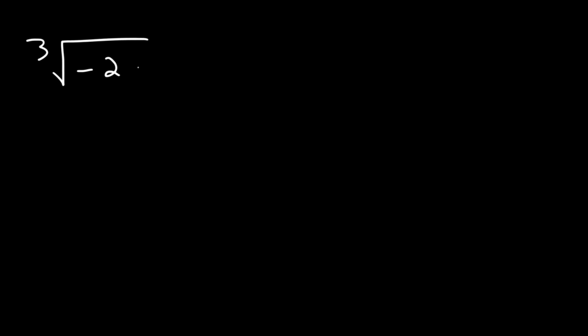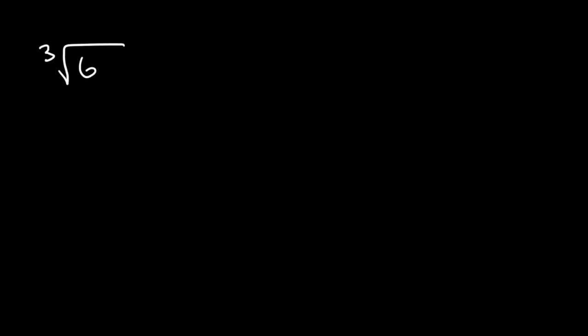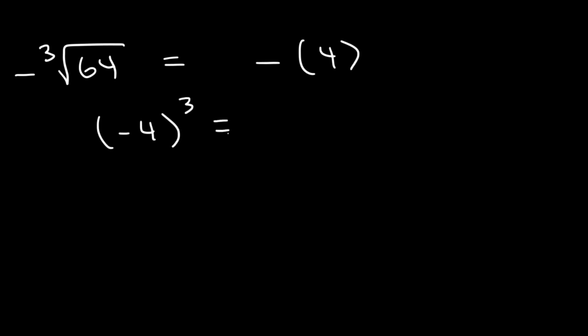Now what is the cube root of negative 27? It turns out it's negative 3. Negative 3 multiplied by itself 3 times is negative 27. And what about the cube root of 64, but with a negative on the outside? The cube root of 64 is 4, and negative 4 multiplied by itself 3 times is negative 64.